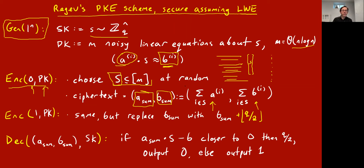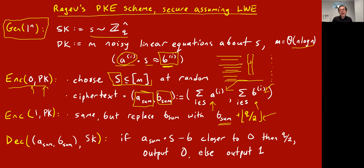When she wants to encrypt one, she does basically the same thing except she takes the final sum b_sum and adds q/2 mod q — which is basically like the maximal noise, almost negating it. The idea for why this is secure is that an adversary is so bad at understanding s just from the a's and b's that the ciphertext looks like a new noisy equation, and adversaries can't tell if you generated it correctly or put in maximal noise on the answer.